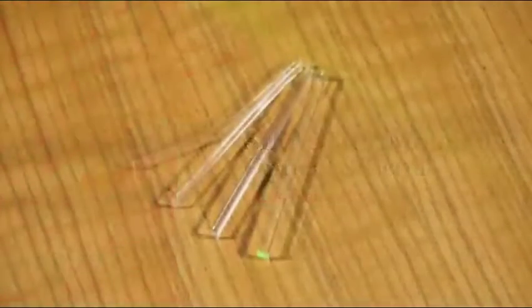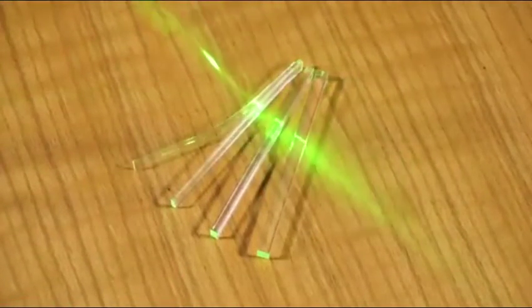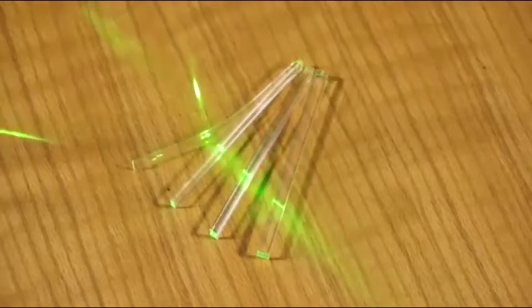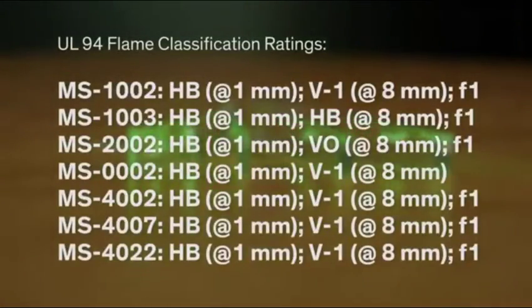These bars are molded in the required shape for UL94 flame classification testing. These are the UL94 flame ratings for Silastic moldable optical silicones. They offer another good example to demonstrate the soft and flexible nature of silicone optical materials.